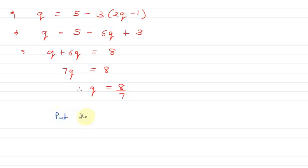Now I'll put the value of q in equation 1. So p equals 2q minus 1. Therefore p equals 2 times 8 upon 7 minus 1.